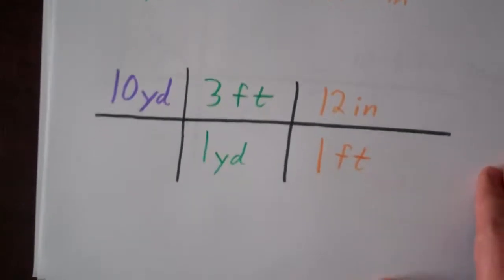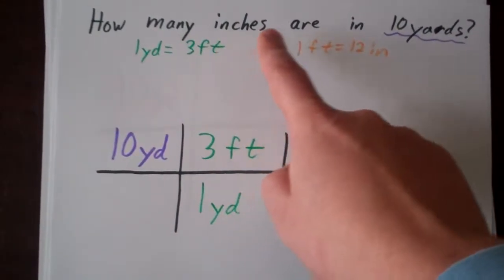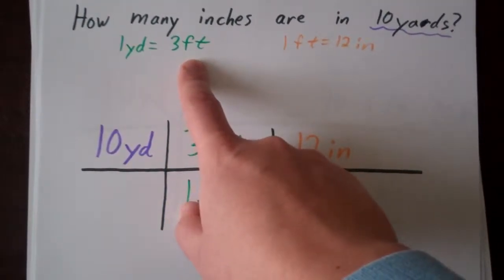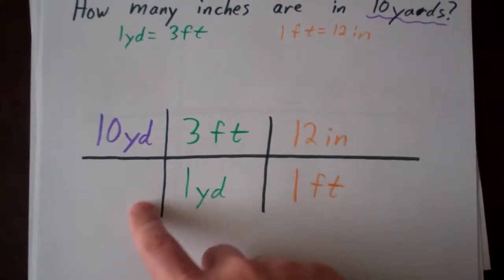Let's go one step further. What if your original question asked you to find how many inches are in 10 yards? Well, we have two conversions to use: 1 yard equals 3 feet, and 1 foot equals 12 inches. Now let's set that up.